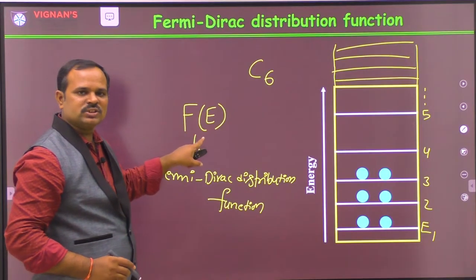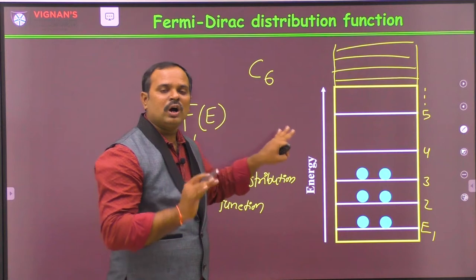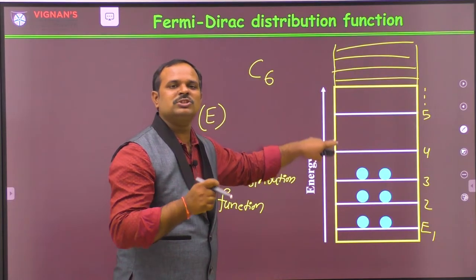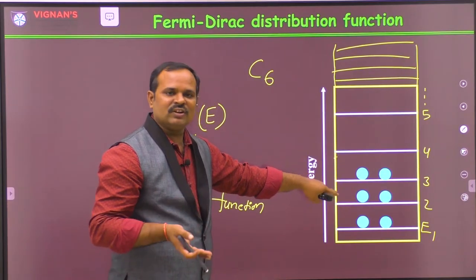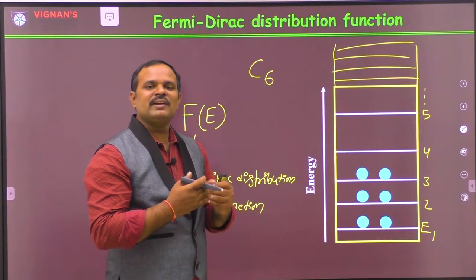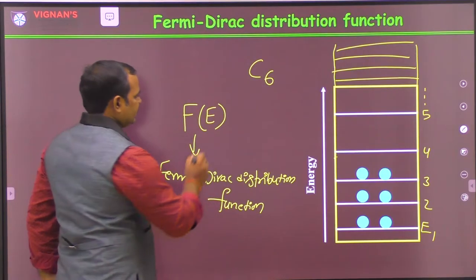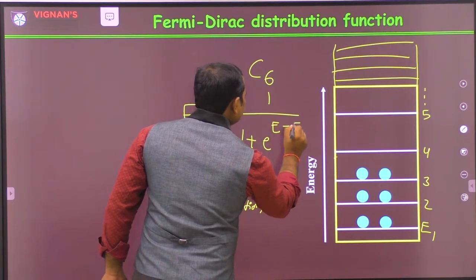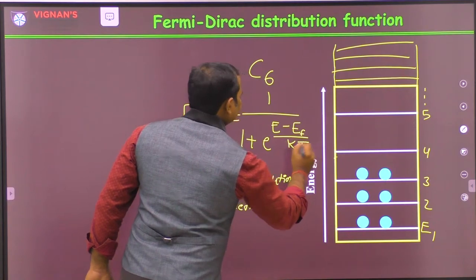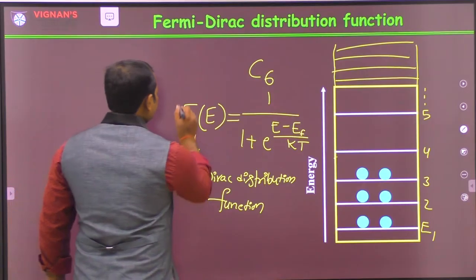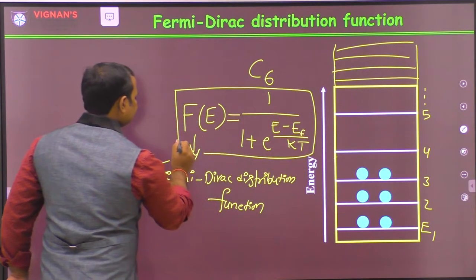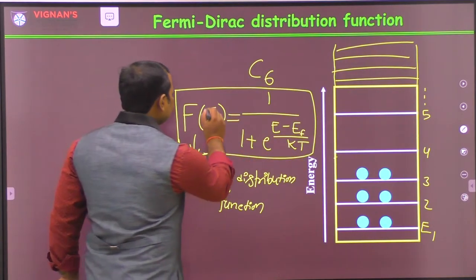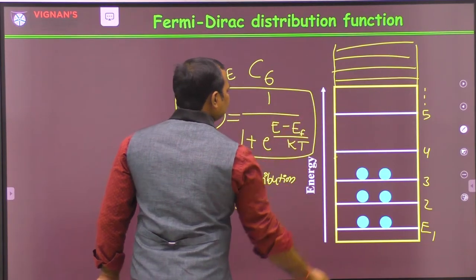The Fermi-Dirac distribution function can give you information about where the electron is present. For a particular energy level — say the fourth energy level — whether any particle or electron is present is given by: F(E) = 1 / (1 + e^((E − EF) / kT)). This is the Fermi-Dirac distribution function, where E could be E1, E2, E3, and so on.